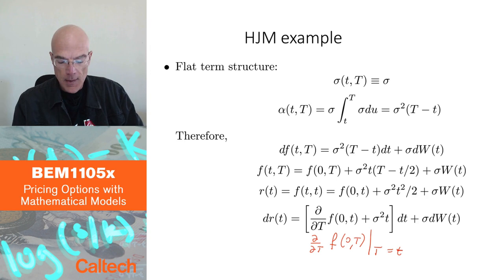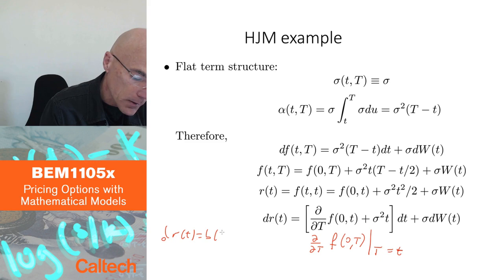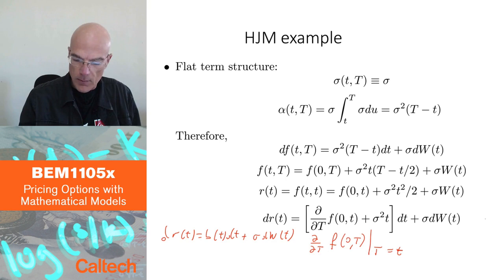So that's the model for the short rate that corresponds to the constant volatility of the forward rates. Do we recognize this model? Well, I don't know if you remember, but this is actually what we call the Ho-Lee model. If you remember, I'll just write it there. The Ho-Lee model was dr(t) was b(t)dt plus sigma dW(t). And the Ho-Lee model was constant volatility of the short rate, which is actually equal to the volatility of the forward rates, plus some deterministic function b(t)dt.